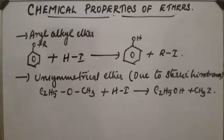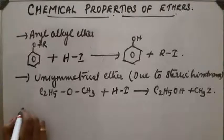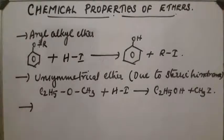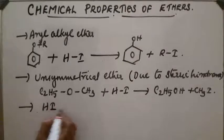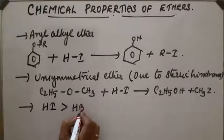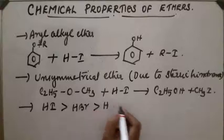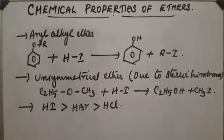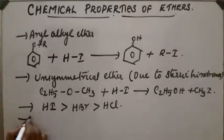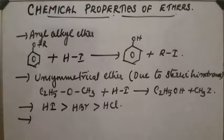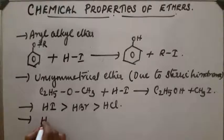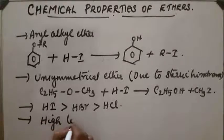The order of reactivity of hydrogen halides is: HI > HBr > HCl. This cleavage of the C-O bond takes place at higher temperature using concentrated hydrogen iodide or hydrogen bromide.